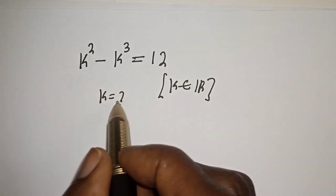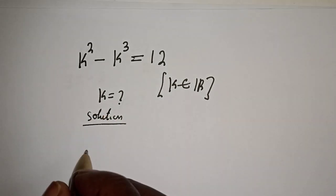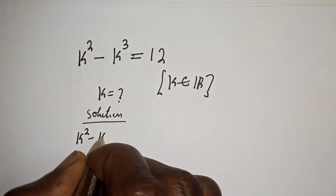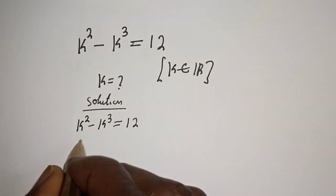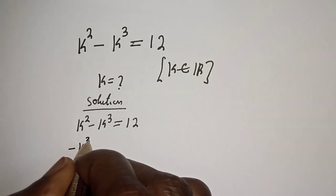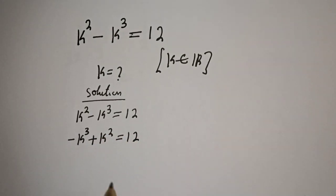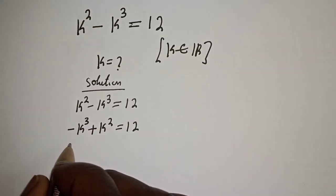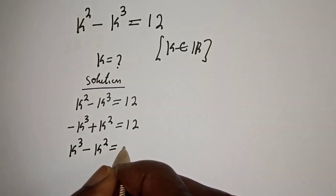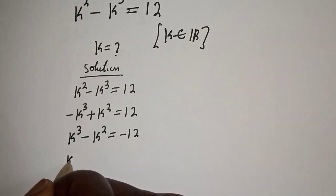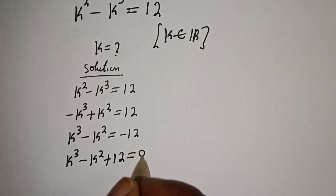Before we proceed, please don't forget to like, share, comment, and subscribe. Solution: k squared minus k raised to power 3 is equal to 12. We can rearrange this: minus k raised to power 3 plus k squared is equal to 12. Multiplying all through by minus one gives k raised to power 3 minus k squared is equal to minus 12. Then k raised to power 3 minus k squared plus 12 is equal to zero.